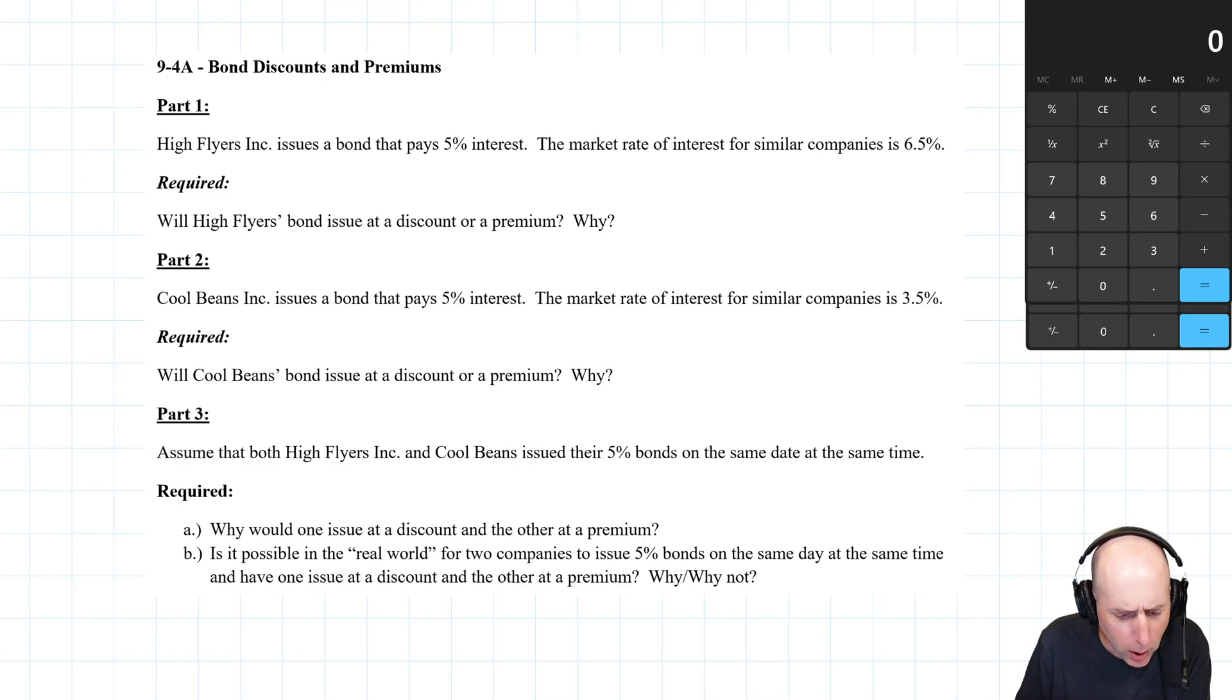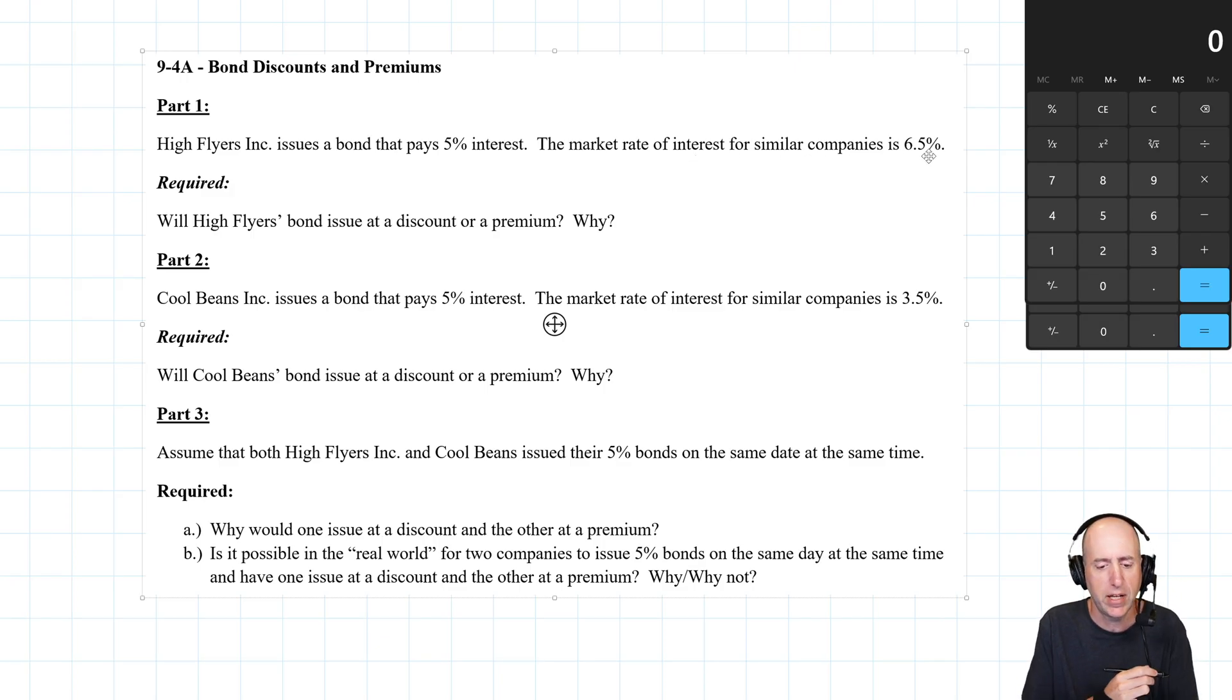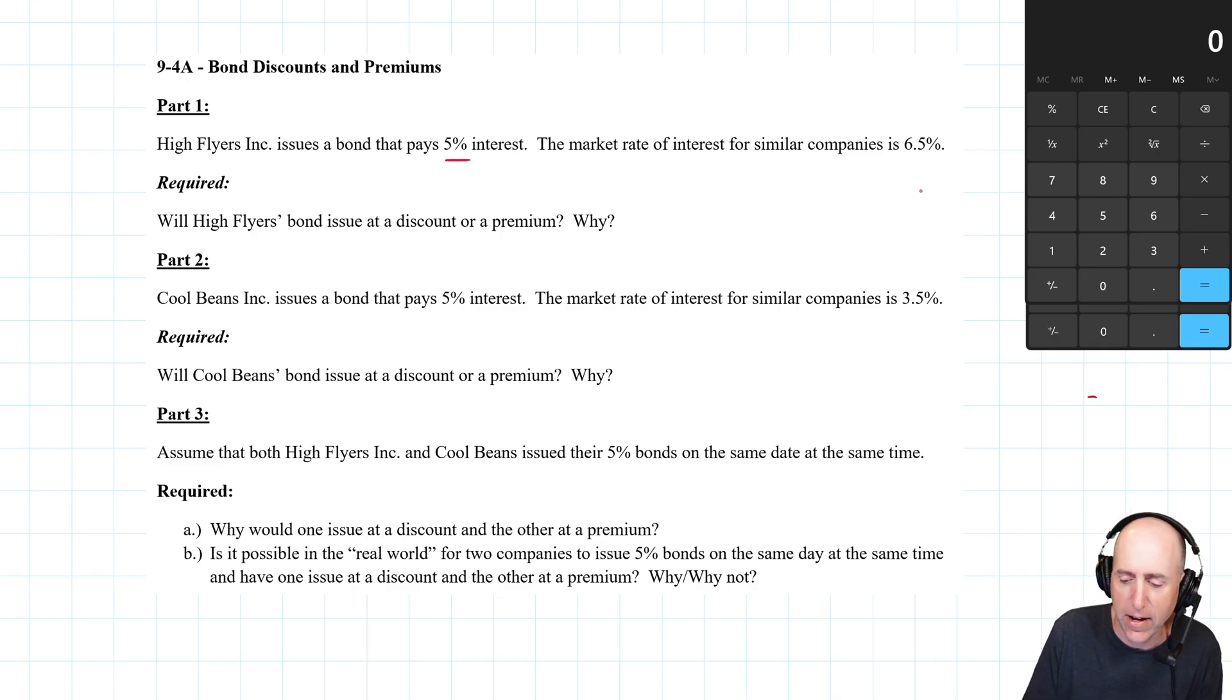High Flyers Inc. issues a bond that pays 5% interest. The market rate of interest for similar companies is 6.5%. Okay, so we're offering 5%. Similar companies to us are offering 6.5%. Will our bonds issue at a discount or a premium? Well, if we're only offering 5%, and you can get 6.5% somewhere else, you're not going to buy my bond for full price. You're going to need to have some discounted price to want to buy the bond. So these bonds will issue at a discount. Why? Because there are more attractive, similar companies offering 6.5%. You can get a better price somewhere else.